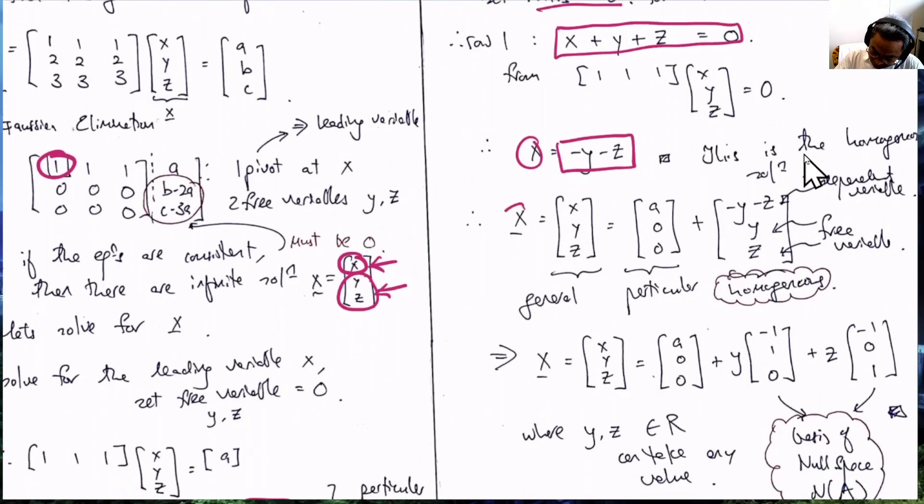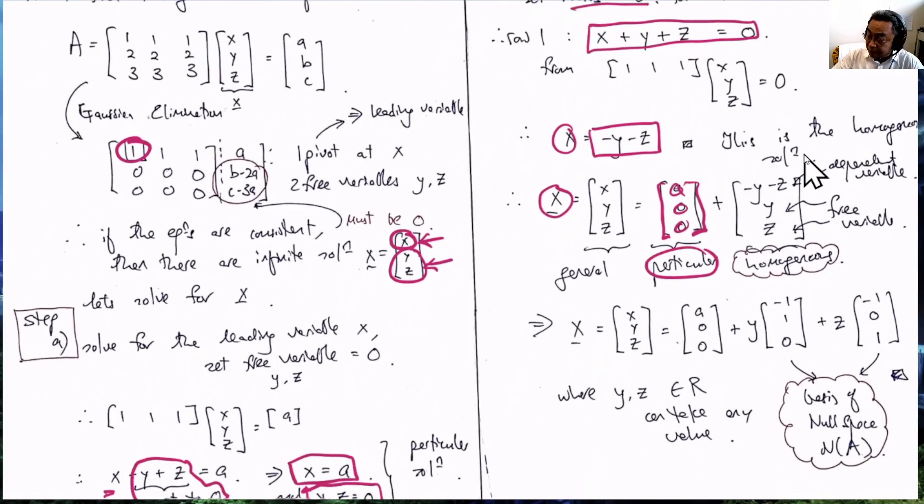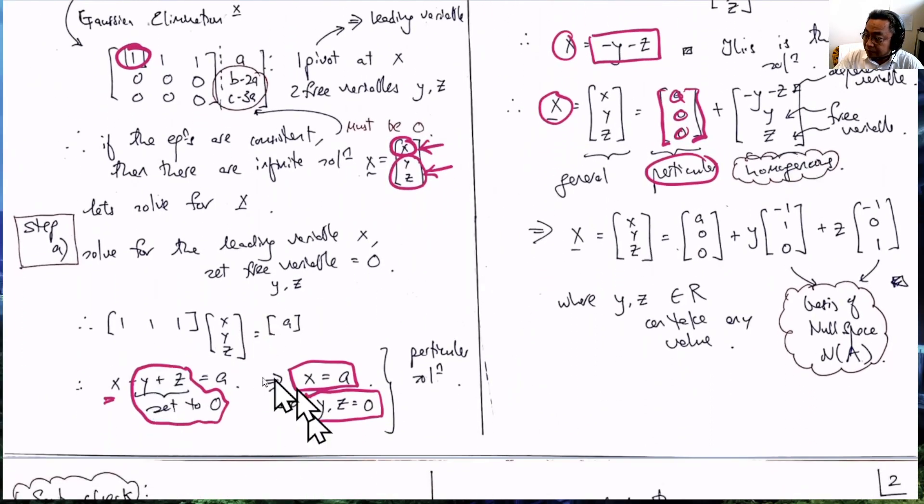This results in the unknown vector X to be the particular solution which is A, 0, 0 as we got in the first part here with Y and Z equals 0.